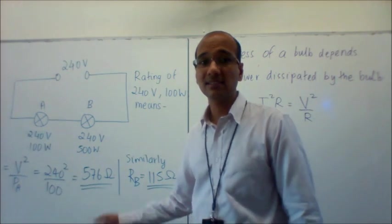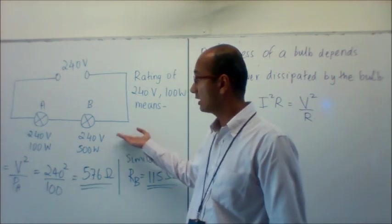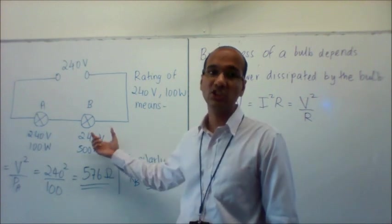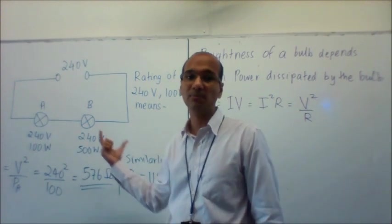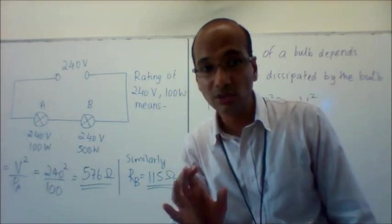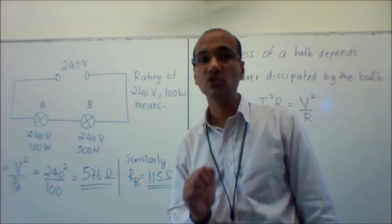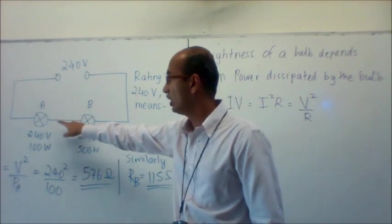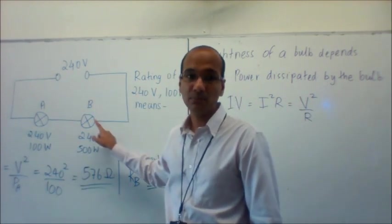Now if I look back at the circuit, I don't know the current flowing through these bulbs, and I don't know the potential difference for each bulb. What I do know is that the potential difference is not 240 volts for each bulb, because 240 volts is the total PD shared by bulb A and bulb B.